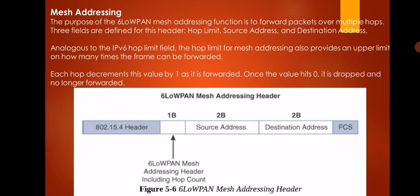Each hop decrements the hop limit value by one as it forwards the packet; once the value hits zero, the packet is dropped and no longer forwarded. The 6LoWPAN mesh addressing header has one byte for hop count, two bytes for source address, and two bytes for destination address. This is how the problem of IPv6-to-IPv4 transition over 802.15.4 can be overcome using header compression, fragmentation, and mesh addressing.